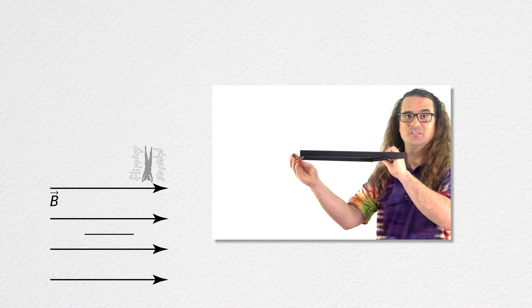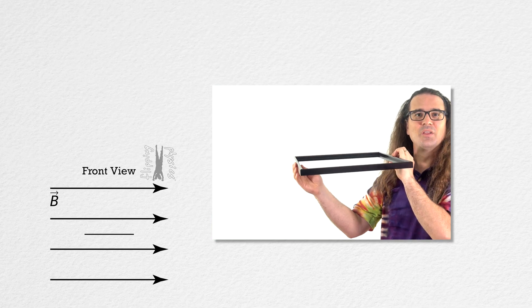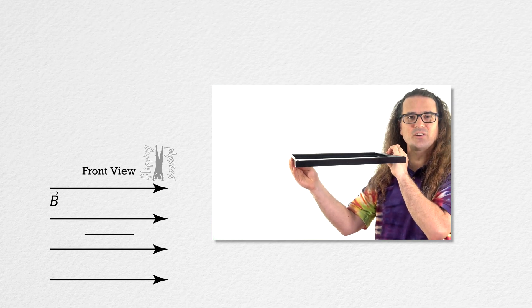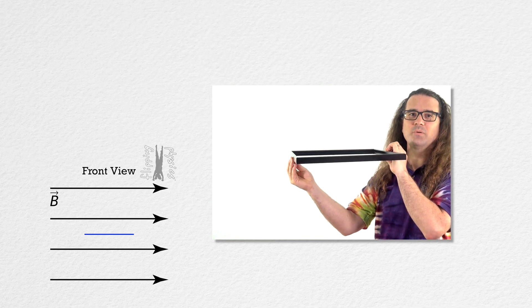We have a rectangular conducting loop — a rectangular wire loop — in a uniform magnetic field oriented like this. In the front view, all you are going to see of the rectangular conducting loop is a straight line representing one side of the loop.